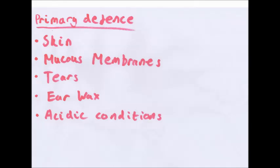The immune system is made out of three main areas: the primary defence, the non-specific secondary defence, and the specific secondary defence.